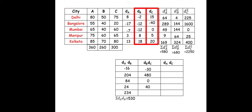Summation of dB·dC = 850. For dA·dC: 8×15 = 120, (−17)×(−40) = 680, (−7)×0 = 0, 3×5 = 15, 13×20 = 260. Summation of dA·dC = 1075. This is straightforward but a bit lengthy.